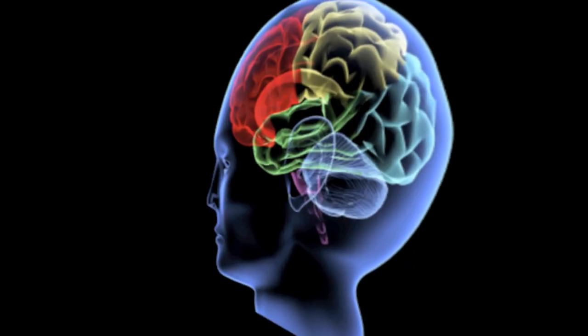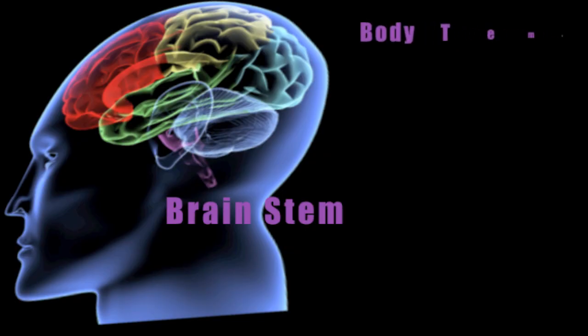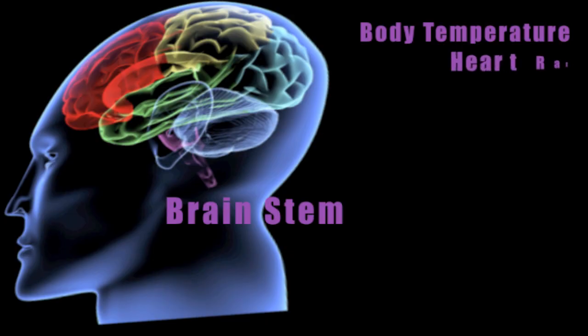Our brain stem controls so much of what happens in our body — so many functions that allow us to survive as human beings. It's an area we take for granted, but when it becomes injured through an accident, the consequences can be horrible. When a person has an injury to their brain stem, we see damaged regulation of the ability to hold body temperature, keeping it healthy rather than getting too hot or too cold.